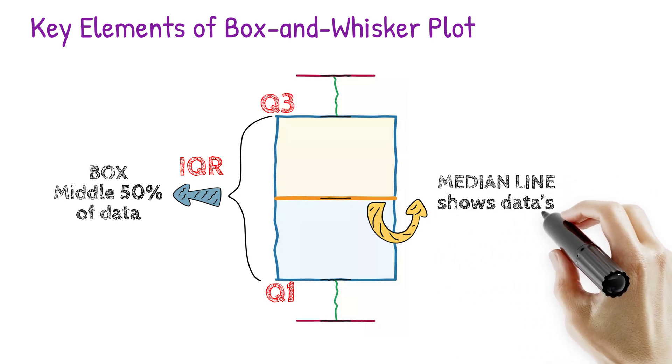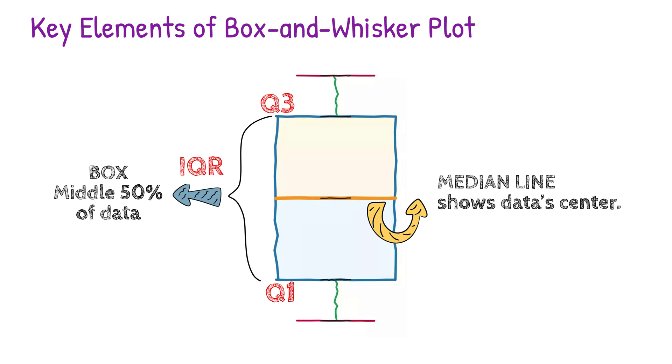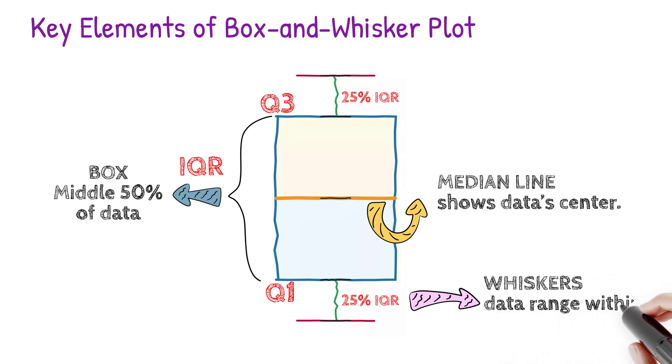Median Line: The line inside the box represents the median, highlighting your data's center. Whiskers extend from the box to the smallest and largest values within 1.5 times the IQR.